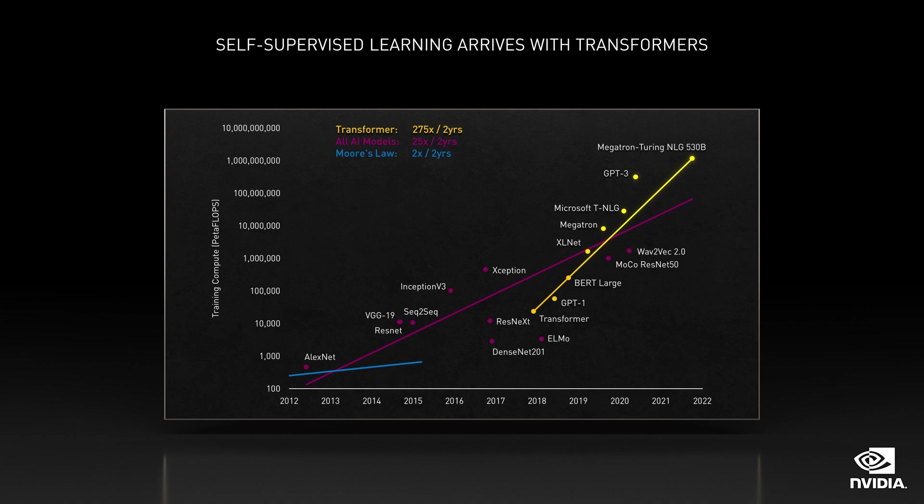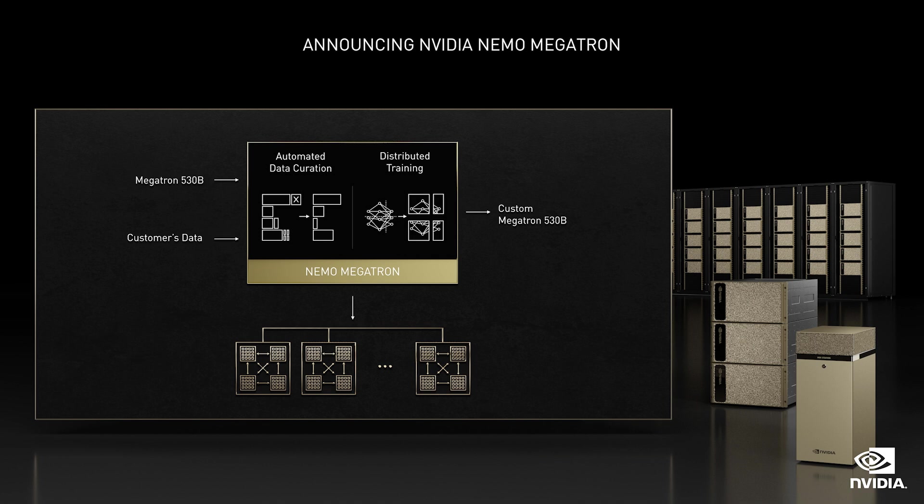Ten new models were announced just last year alone. Training large language models is not for the faint of heart. Hundred-million-dollar systems training trillion-parameter models on petabytes of data for months require conviction, deep expertise, and an optimized stack. We created Nemo Megatron, a framework dedicated to training speech and language models of billions and trillions of parameters. Our researchers trained GPT-3 on NVIDIA's 500-node Selene DGX SuperPod in 11 days, and together with Microsoft, trained the Megatron MTNLG 530 billion-parameter model in six weeks.